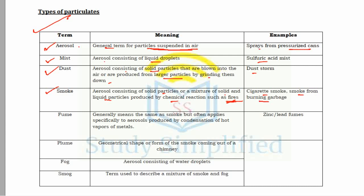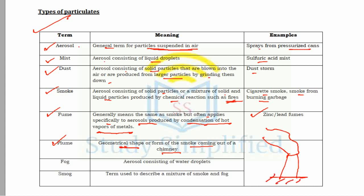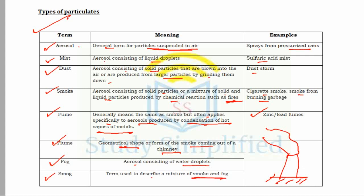Fume is specifically applied to aerosols produced from condensation of hot vapors or metals, such as zinc and lead fumes. A plume is the geometrical shape formed by smoke coming out of a chimney. Fog is an aerosol consisting of water droplets. Smog is a general term used for the mixture of smoke and fog.